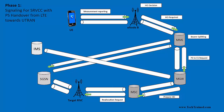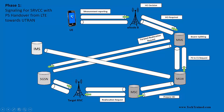If the target RNC agrees to the relocation request, it sends an acknowledgement. For the data portion, MME also forwards a relocation request towards the SGSN, and SGSN forwards it towards the target RNC. The target RNC makes the decision for both circuit switch and packet switch requests, sending a relocation acknowledgement back towards SGSN, and then a Forward Relocation Response all the way back to MME.